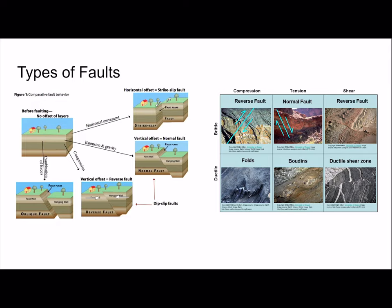Under shear stress, which happens at transform boundaries where plates slide horizontally past each other, we get a strike-slip fault. Under tension, which happens at divergent boundaries where plates spread apart, we get a normal fault — the foot wall ends up at a higher level than the hanging wall. Under compression, which happens at convergent boundaries where plates collide, we get the opposite: a reverse fault, where the hanging wall ends up on top. And faults don't have to occur just at boundaries — they can happen within plates themselves.